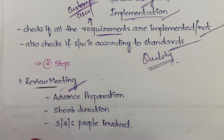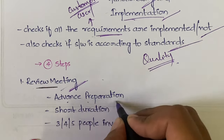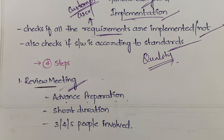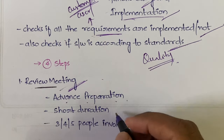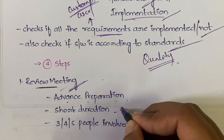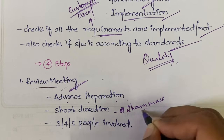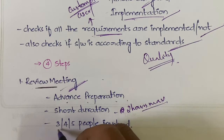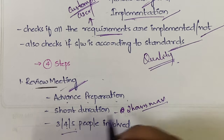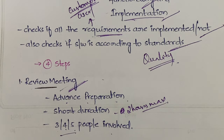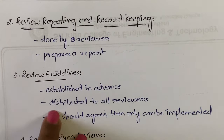Review meeting: advanced preparation has to be done — you cannot schedule it on the spot. The meeting should be of short duration, maximum two hours. Three to four or five people can be involved in the review meeting, not more than that.